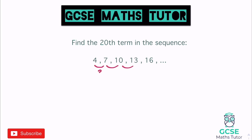First we find the nth term of the sequence. It goes up in threes, so the start of our nth term is 3n — it's related to the three times table. Using our trick, we go backwards: subtract three, which gives us positive one. So the nth term is 3n plus 1, meaning the three times table with one added on.